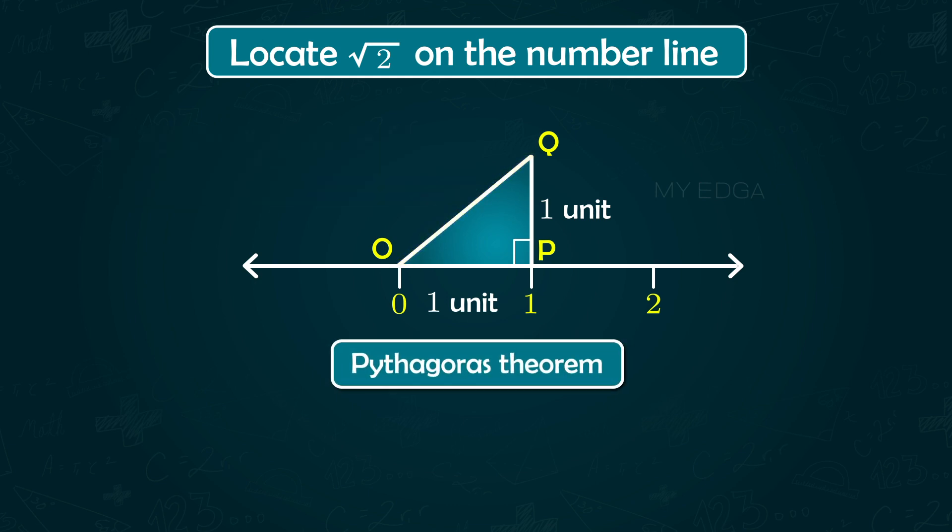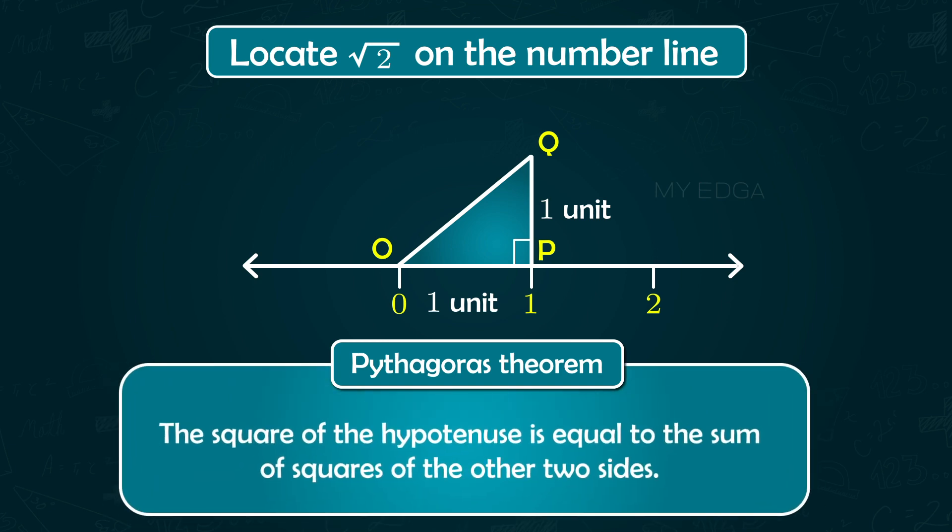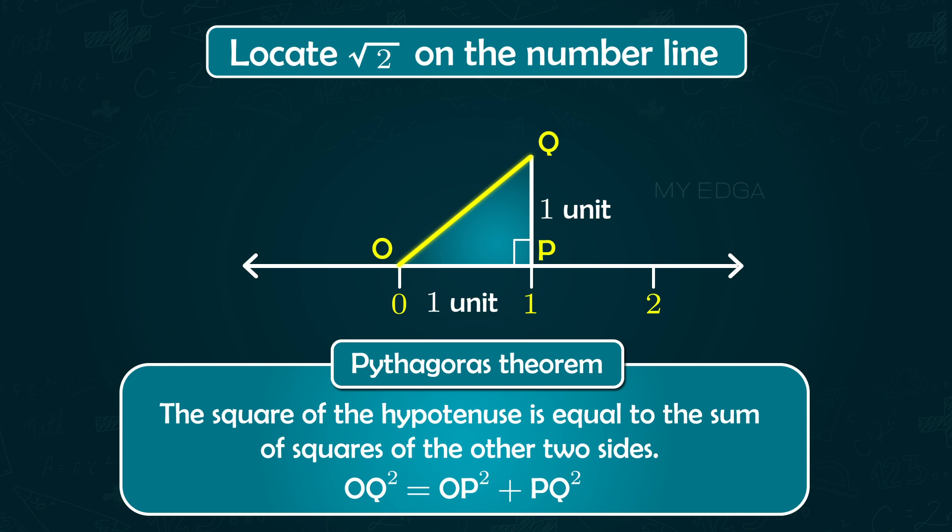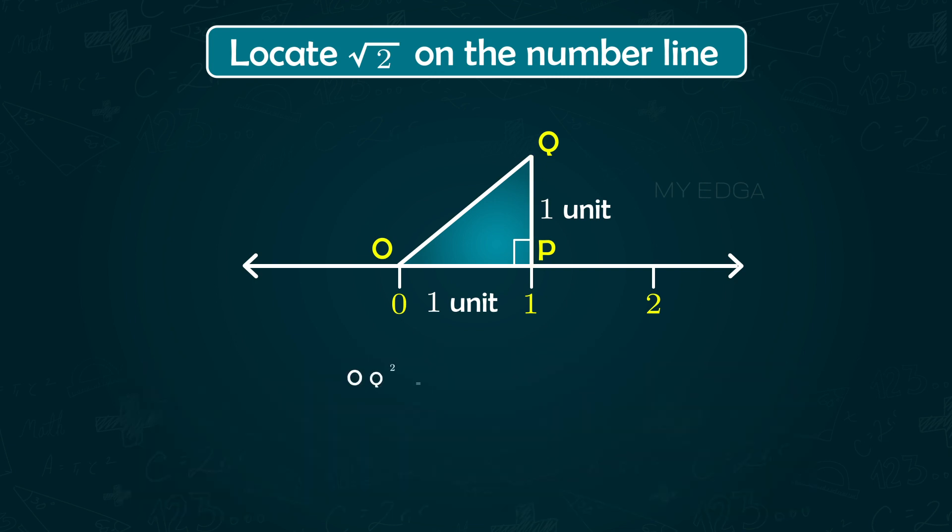According to Pythagoras theorem, in a right-angled triangle the square of the hypotenuse is equal to the sum of squares of the other two sides. Here OQ² = OP² + PQ². So we get the value of hypotenuse OQ as √2.